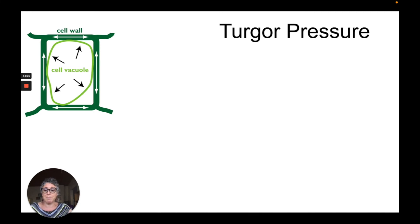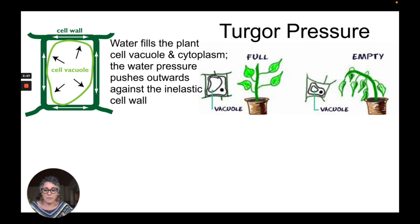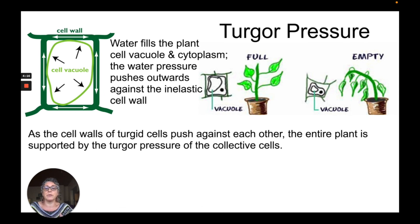As a result of turgidity, we end up with something called turgor pressure. Turgor pressure is when all the cells in the plant are filled with water, and the vacuole and cytoplasm cause water pressure to push on the cell wall, which is elastic. The entire plant is then supported by the turgor pressure of the collective cells together, so the plant stands up straight. This enables the plant to do photosynthesis because its leaves have access to sunlight, compared to a wilted plant where the leaves are drooping.